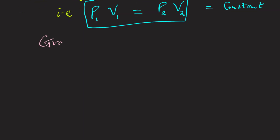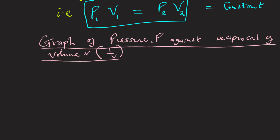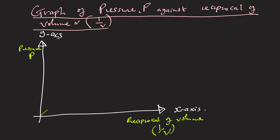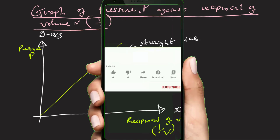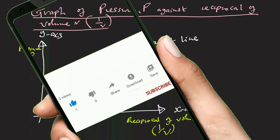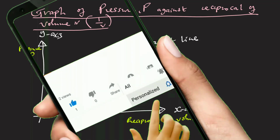If we further plot a graph of pressure against the reciprocal of volume, we will have the following diagram — the graph will be a straight line. If this video lesson is helpful, don't forget to like it, subscribe to our YouTube channel, and click on the notification bell to be notified of new videos when we release them.